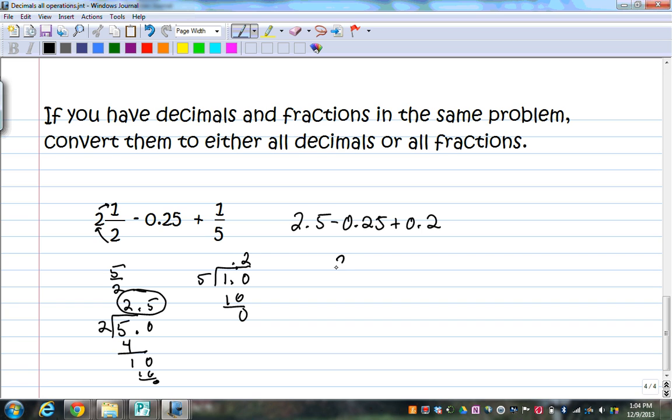So what I would do then is 2.5 minus 0.25, fill in this space. I started with this because order of operations says addition, subtraction, do it as it occurs from left to right. Addition doesn't have to come first. Don't make that mistake. Then, cannot do this subtraction, so I borrow. 10 minus 5 is 5. 4 minus 2 is 2, 2 minus 0 is 2.